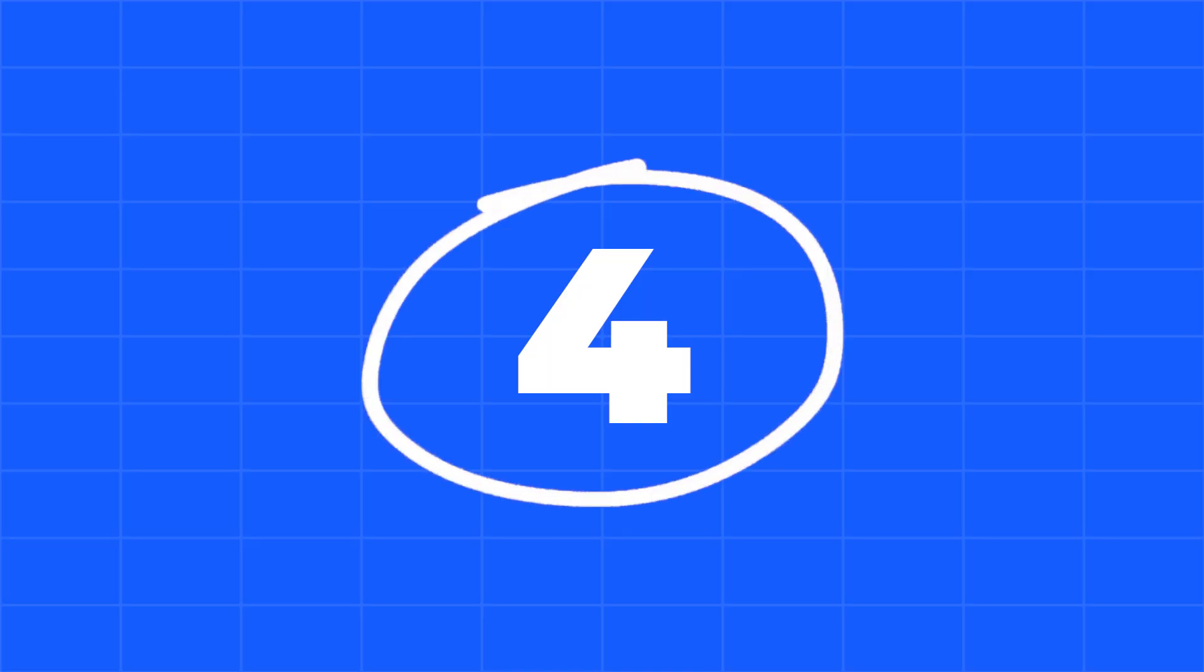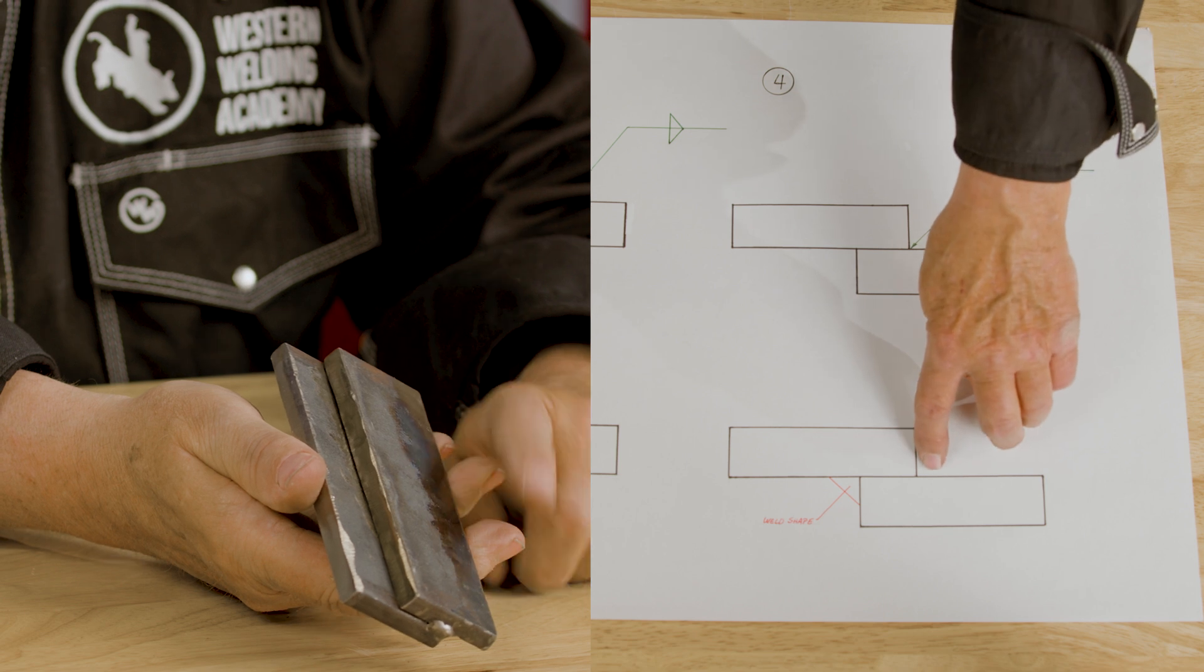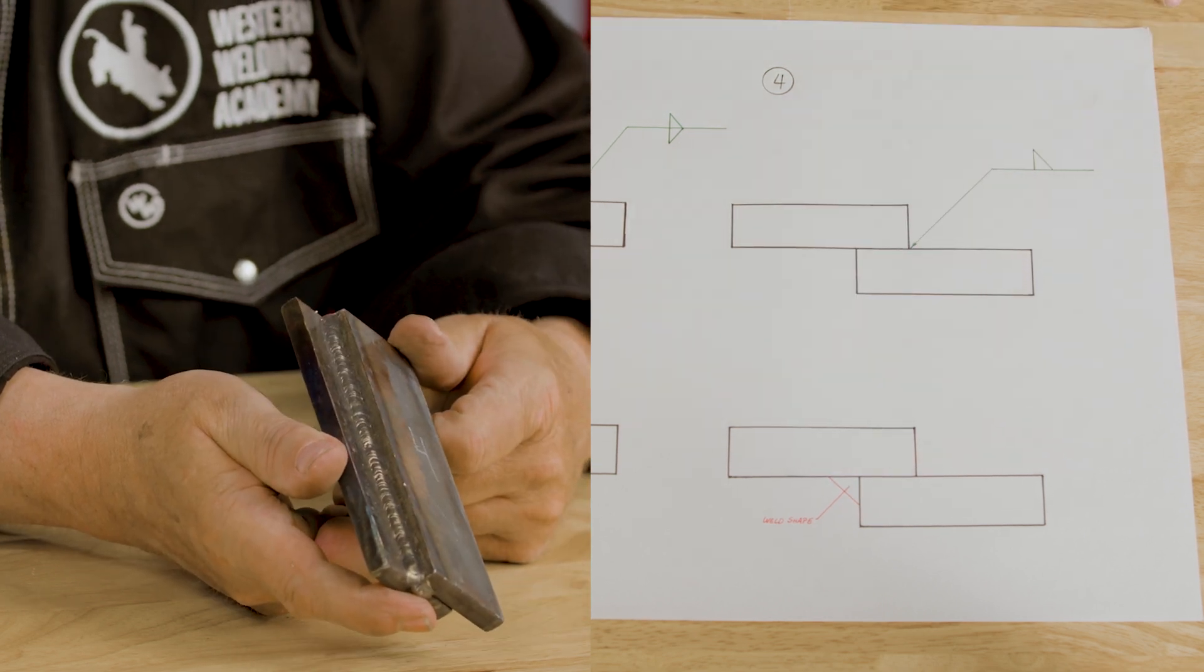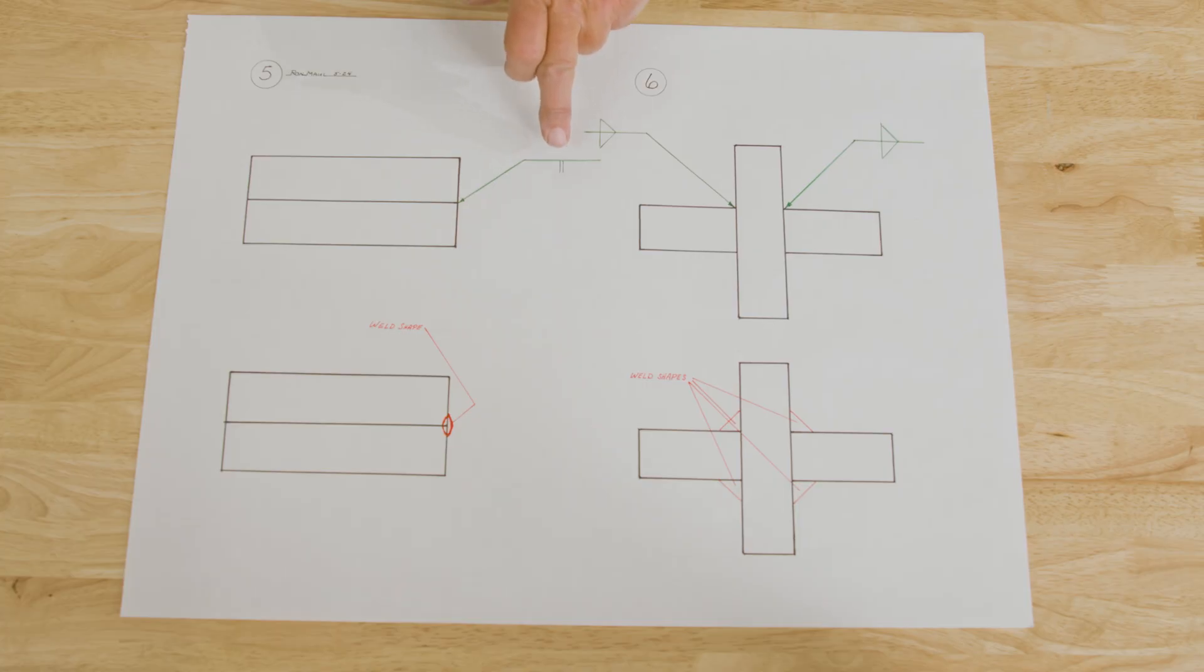This one's the same thing. You have the fillet, but it's only on the other side. So here's the arrow side, here's the other side. That's what that weld will look like. And this welding symbol, your weld symbol just says edge weld, and that's all.